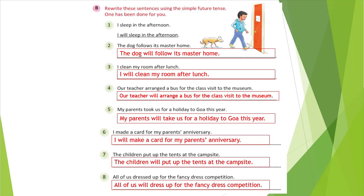Let us see the next exercise: rewrite these sentences using simple future tense. What we need to do is rewrite each sentence in simple future tense. First: I sleep in the afternoon. This is a regular duty, but we want to show it in the future — the verb is sleep. In the place of the verb we write will plus the base form — will sleep. So the answer is: I will sleep in the afternoon.